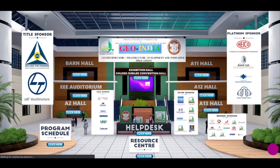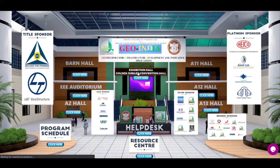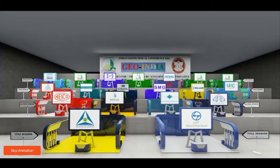Click on the home button on the top left hand side to go back to the main lobby, and click on the exhibition hall to see the sponsored list.